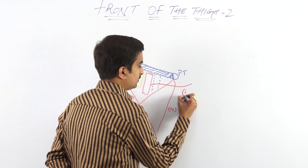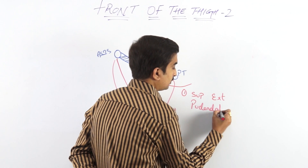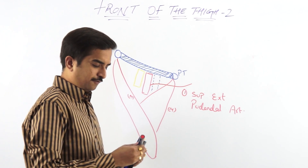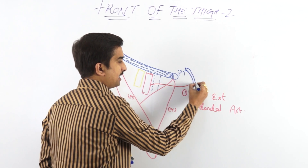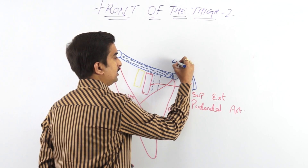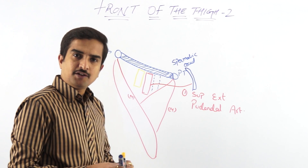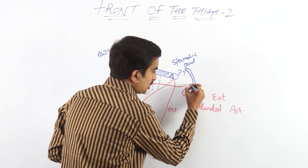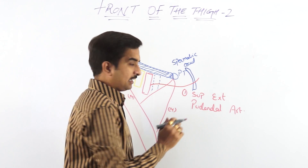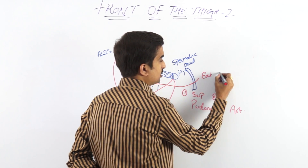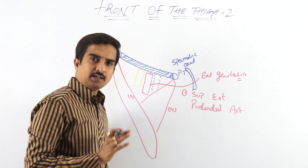The superficial external pudendal artery crosses the spermatic cord and supplies the external genitalia.